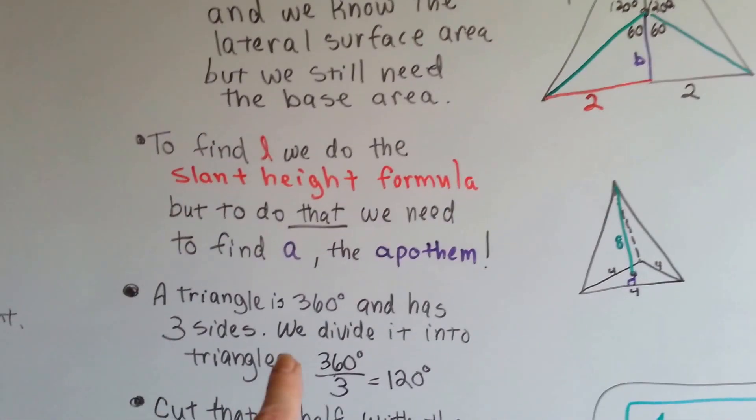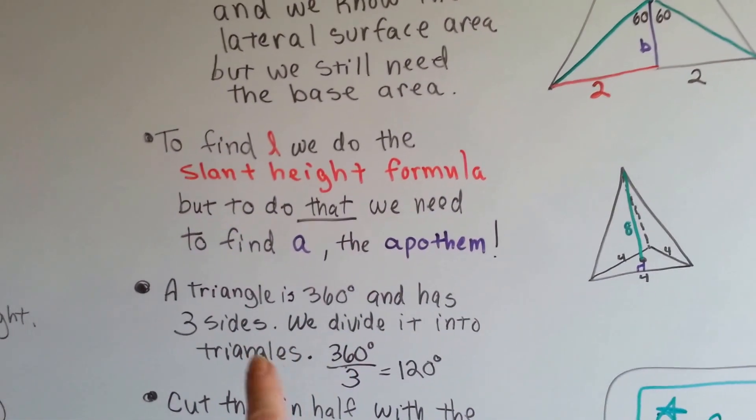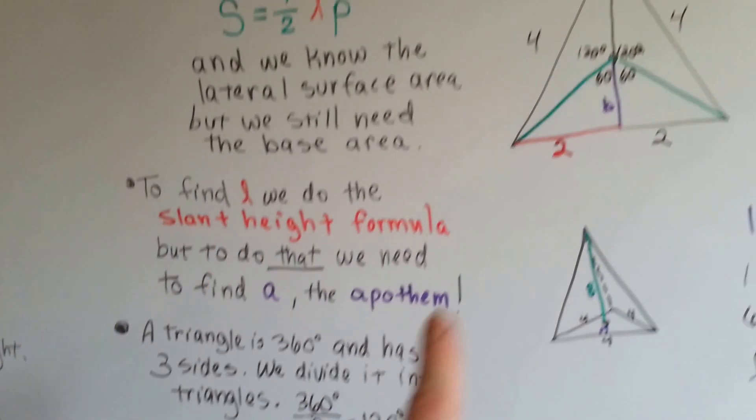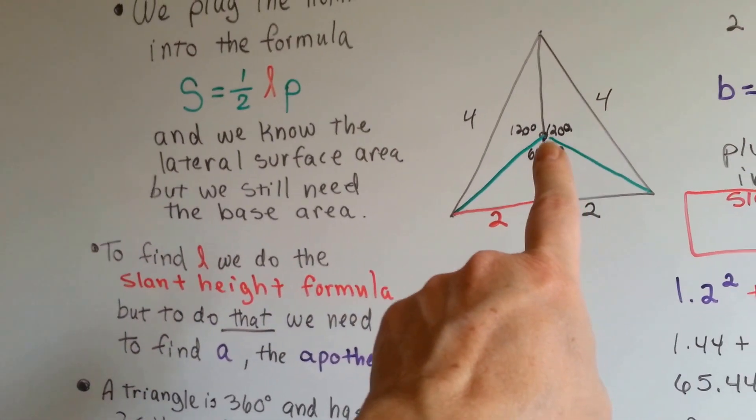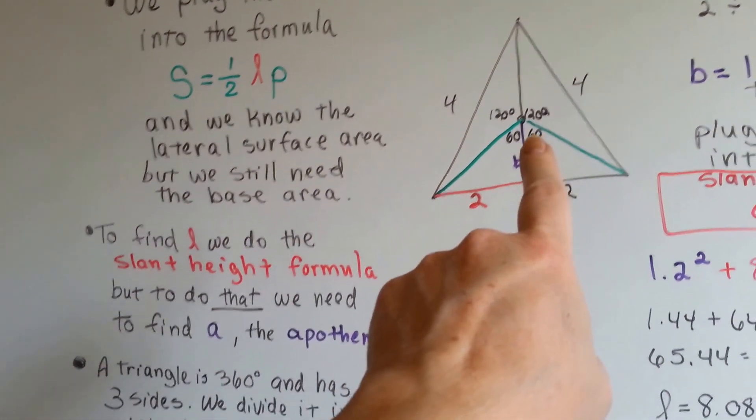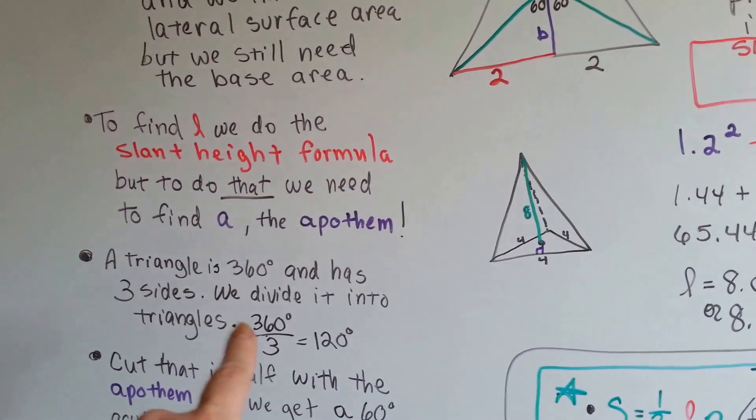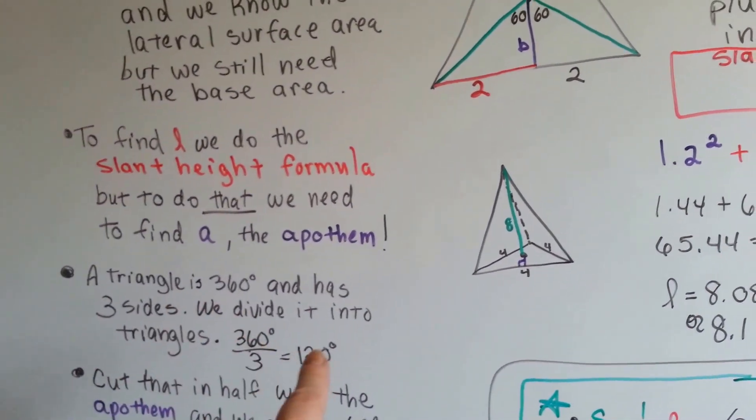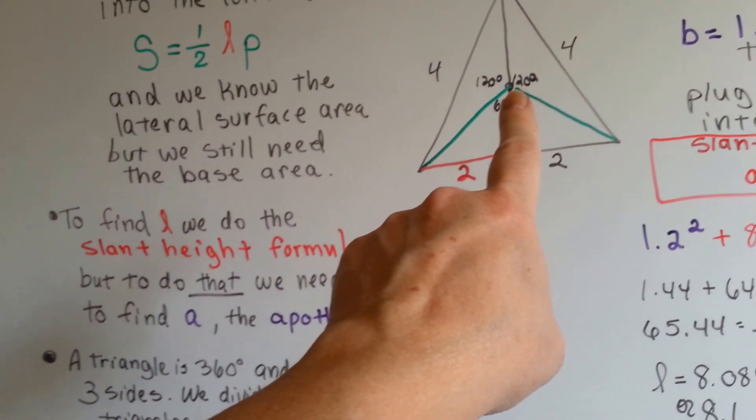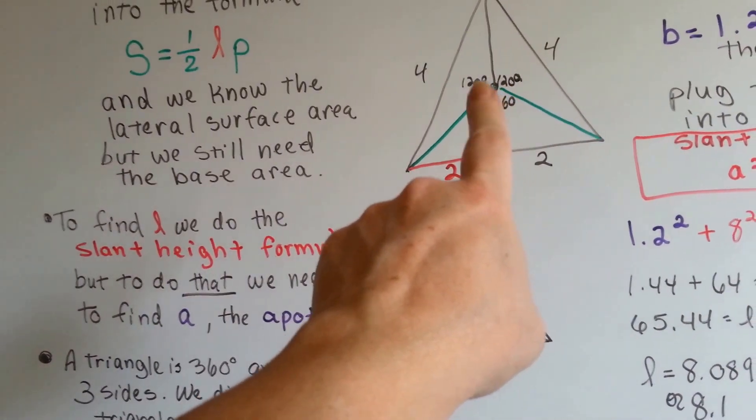Here's a triangle. A triangle is 360 degrees and it has three sides. So what we do is we divide it into three triangles. One, two, three. The 360 that the triangle is divided by three is 120. So each one of these has a 120 degree internal angle. See that? 120, 120.